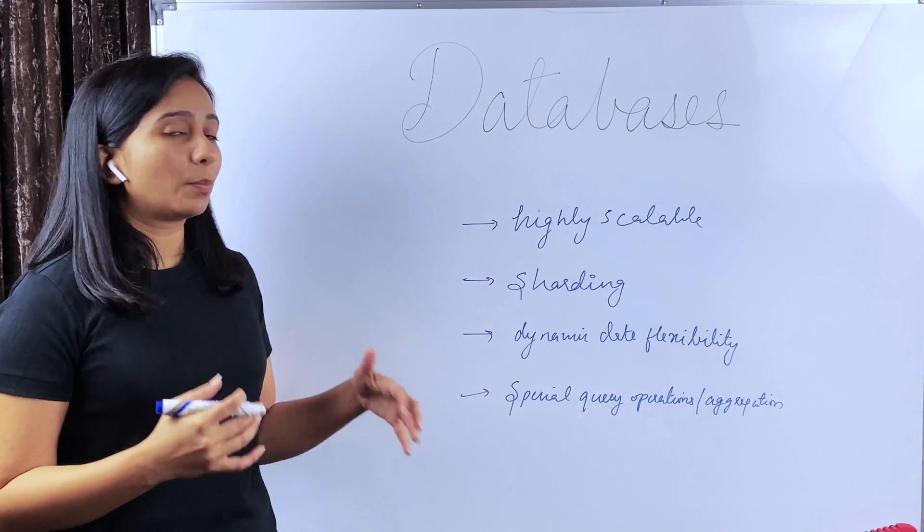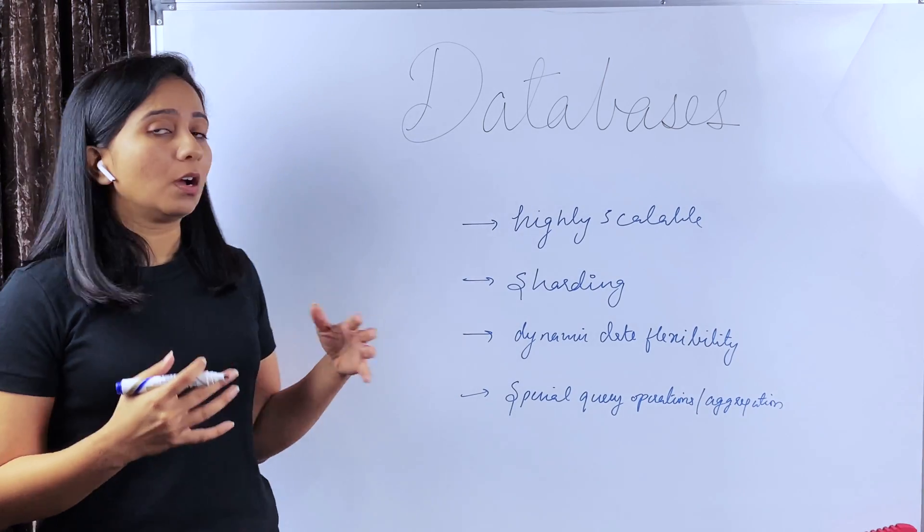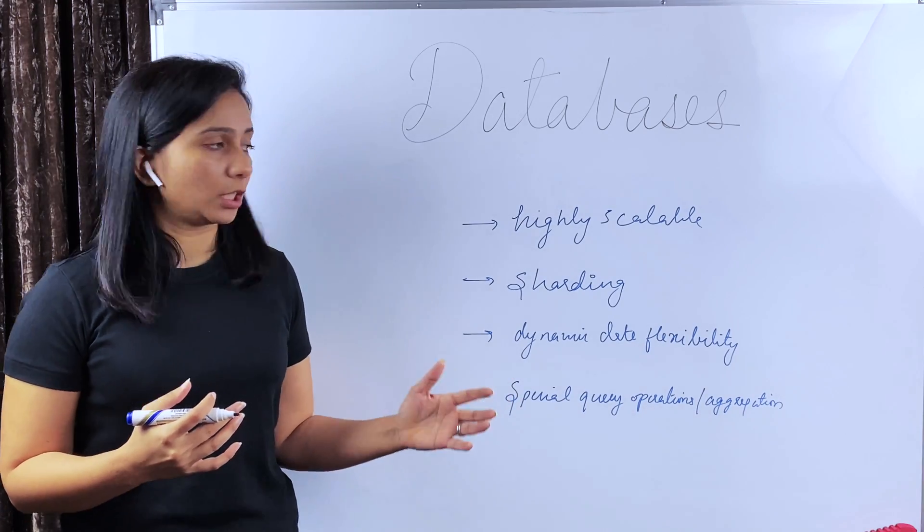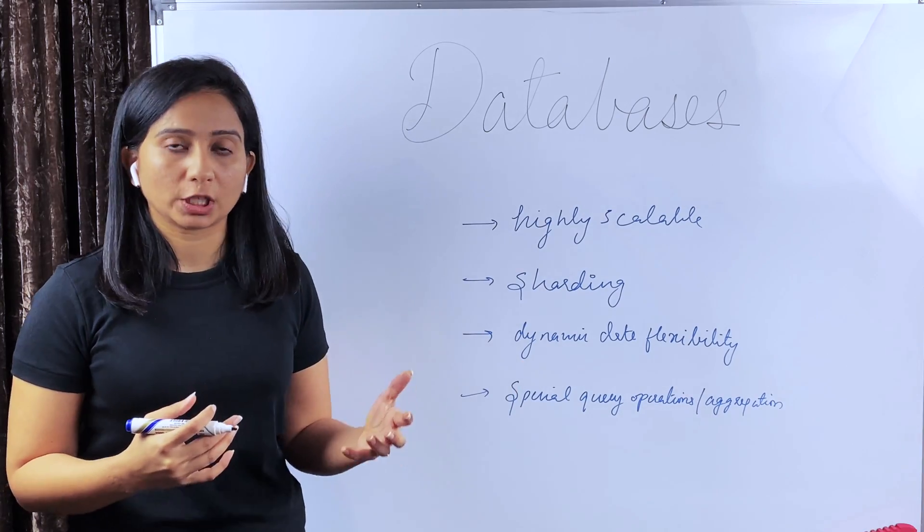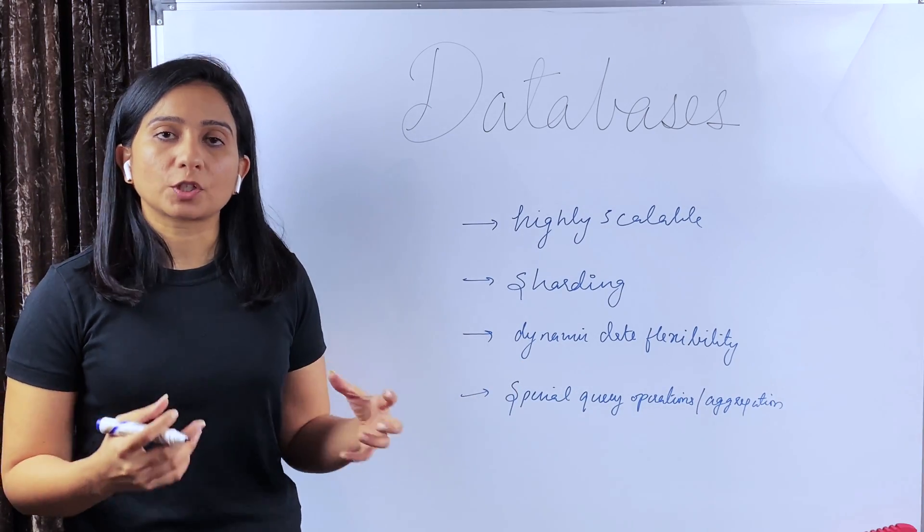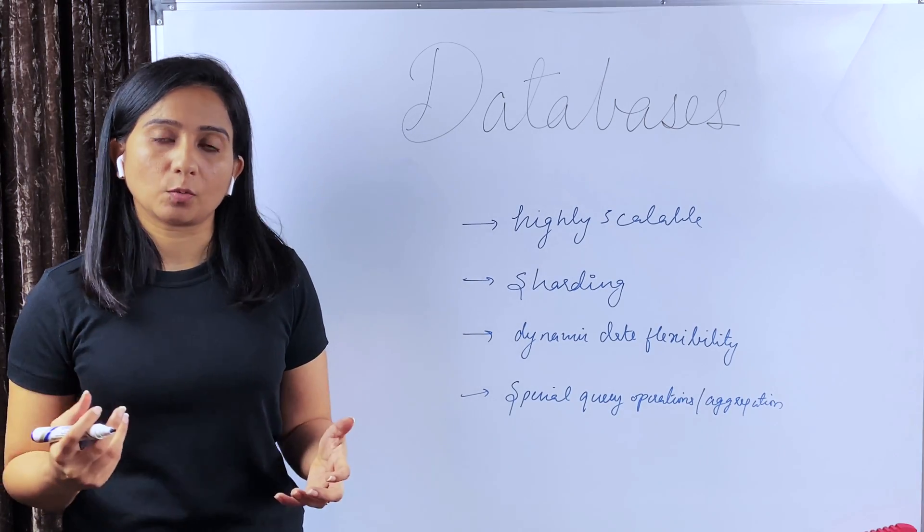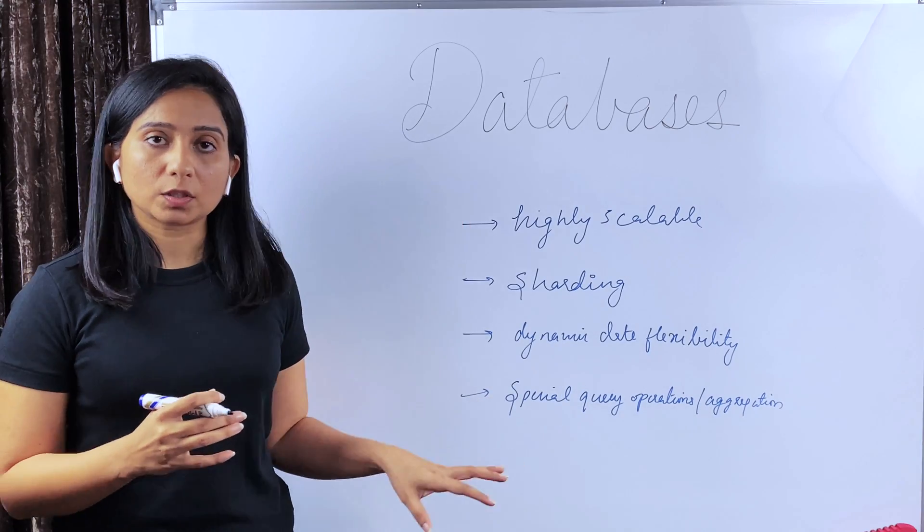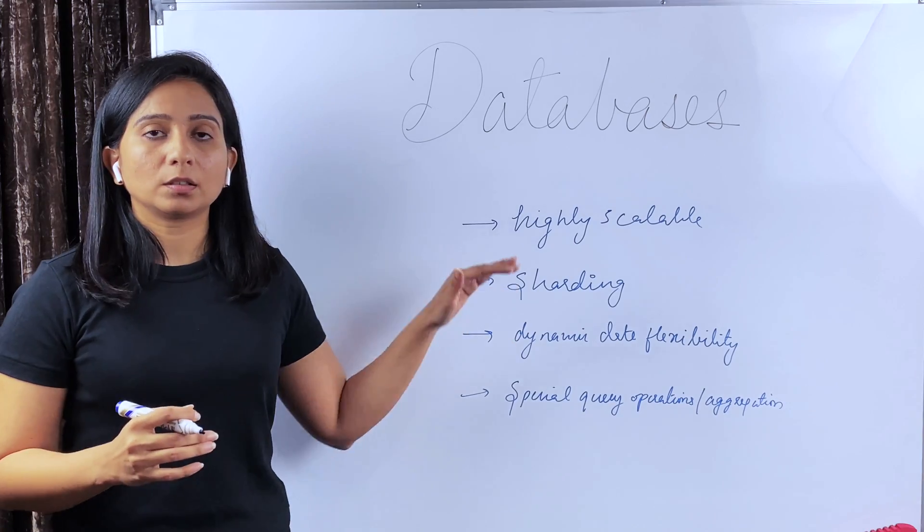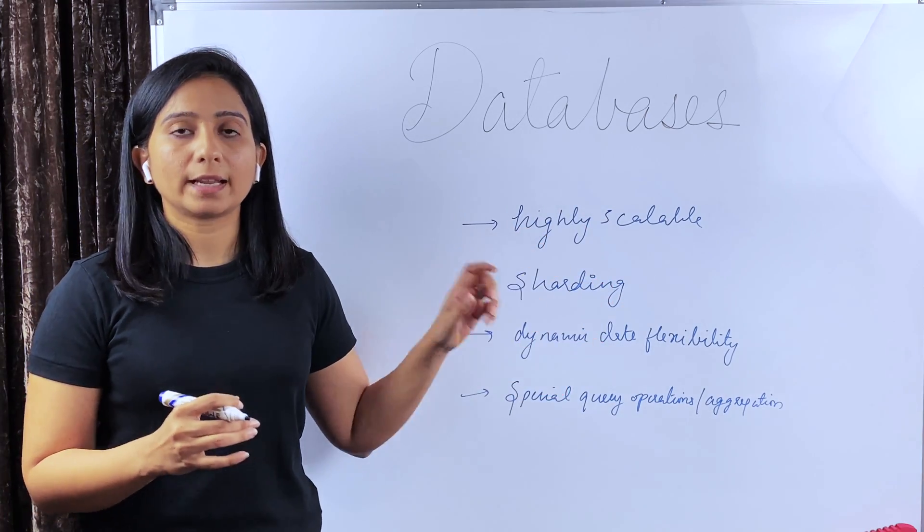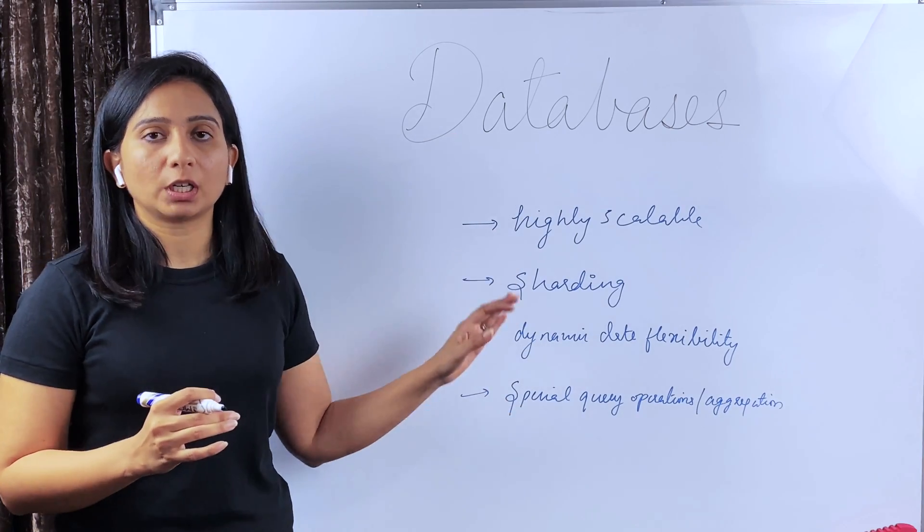So to summarize, some of the benefits or the reasons to choose document databases is they are highly scalable. They provide sharding capabilities. If you have dynamic data and you want that flexibility that you need a schema-less organization of your data. Also, such DBs provide special querying operations, aggregation queries that can help you to fetch data as per the requirement. When you have all these factors, NoSQL DBs or document DBs are one of the choices. If you don't understand sharding or horizontal or vertical scaling, as I said, there are dedicated videos on this topic and we'll cover more about DB sharding in those videos.